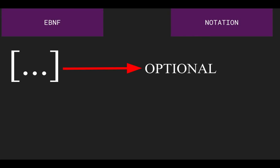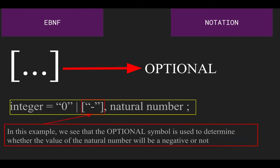This one uses an open and closed square bracket and is named optional, where it means the terminals and non-terminals that are in it can occur or not, depending on the situation. In this example, we can see that if the integer is a natural number, the optional segment is being used for the negative symbol, meaning that the natural number can be a negative value.